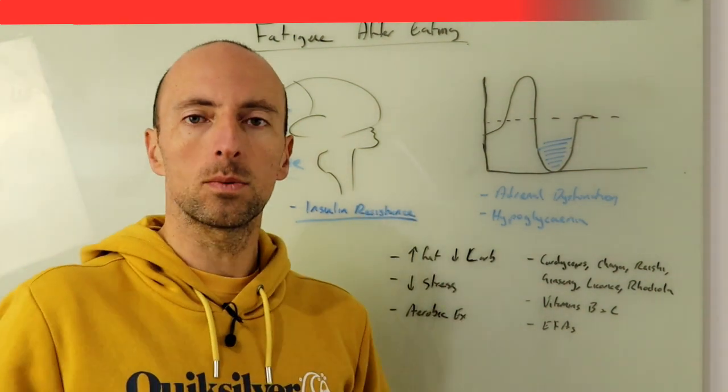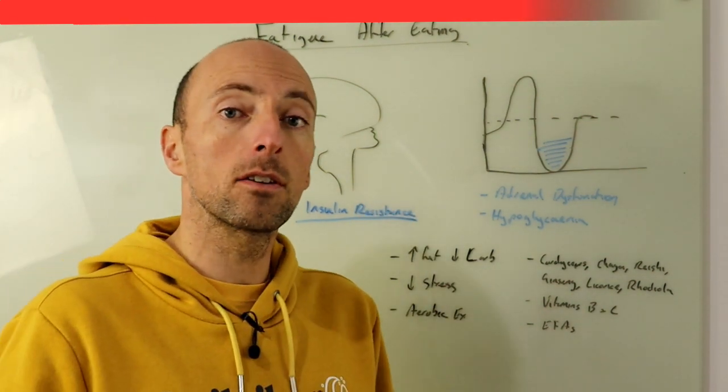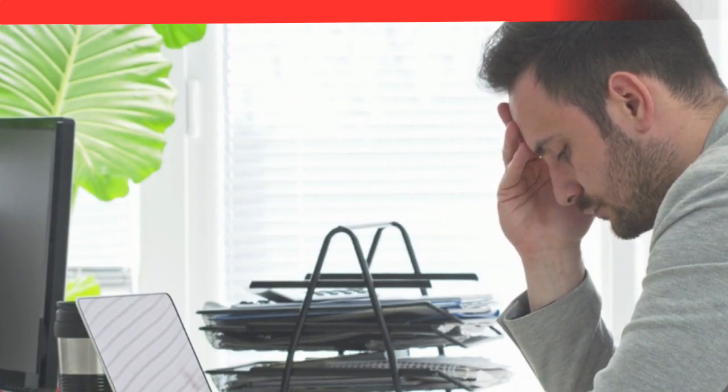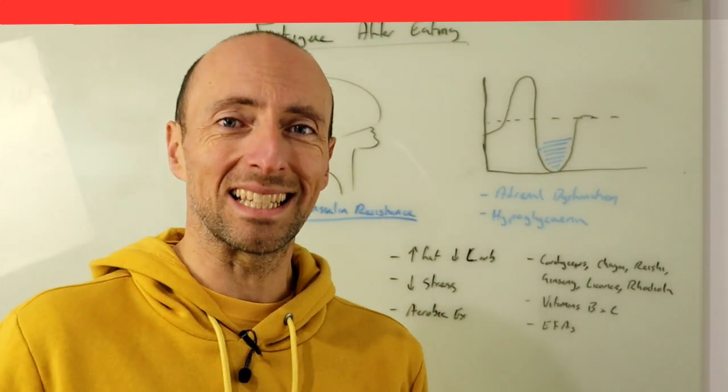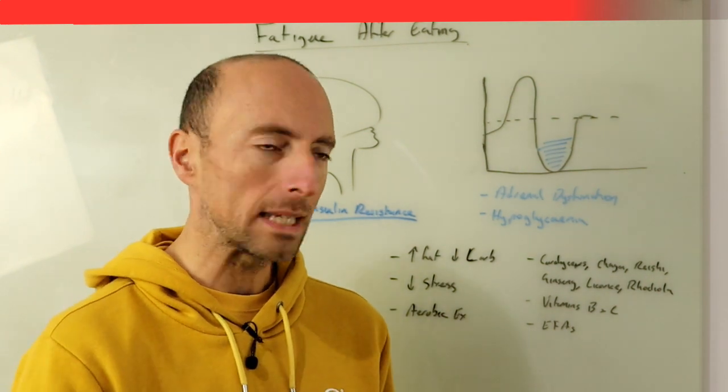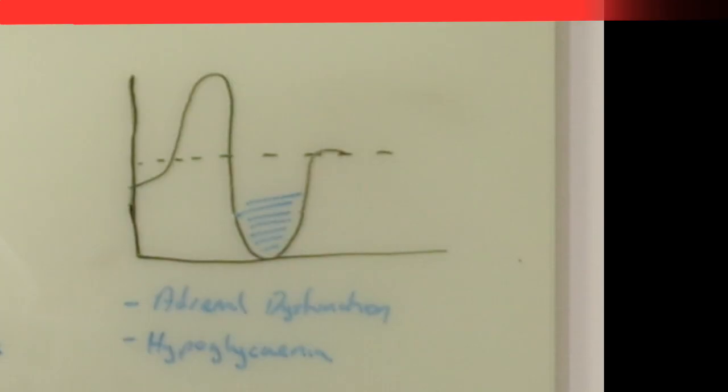The other one that we see is when people have eaten and about half an hour or so afterwards they get really exhausted but this can also be incorporated with things like confusion, brain fog, can also be associated with an excessive want to eat again to have some sweets something like that afterwards and in this situation what happens is we have our meal we get this elevation of glucose.